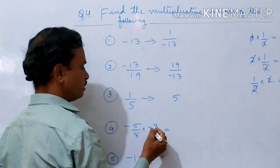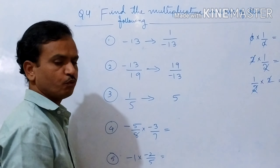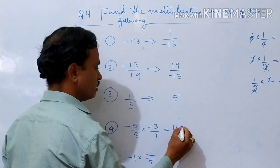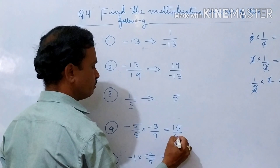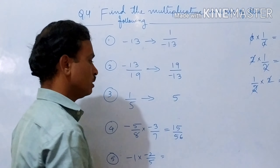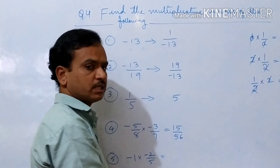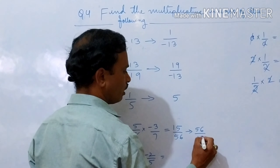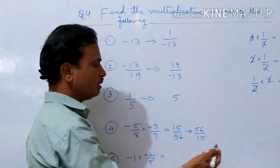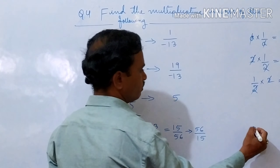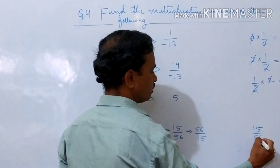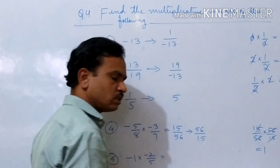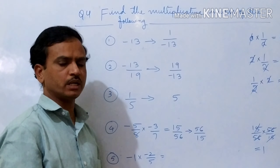Now minus 5 by 8 times minus 3 by 7 — we are given two terms, so first multiply them. Minus into minus is plus, 5 times 3 is 15, and 8 times 7 is 56, giving 15 by 56. The multiplicative inverse of 15 by 56 is its reciprocal: 56 divided by 15. If you cancel 15 by 56 times 56 by 15, the 15s and 56s cancel, giving 1, the multiplicative identity.